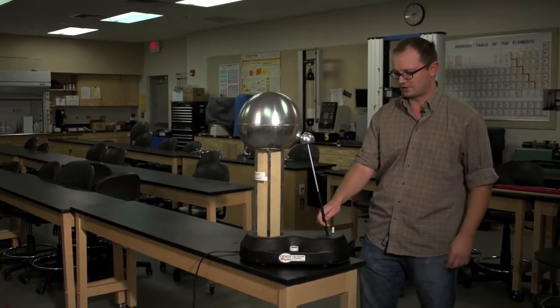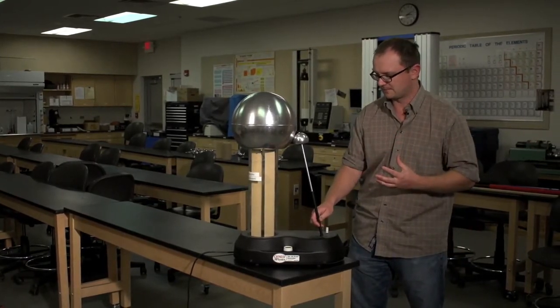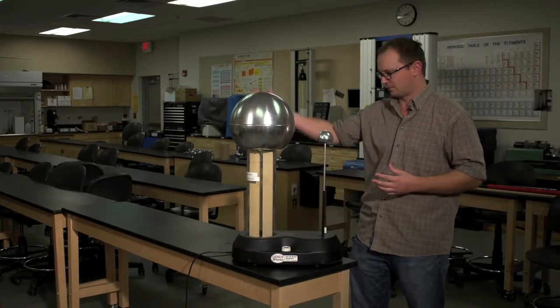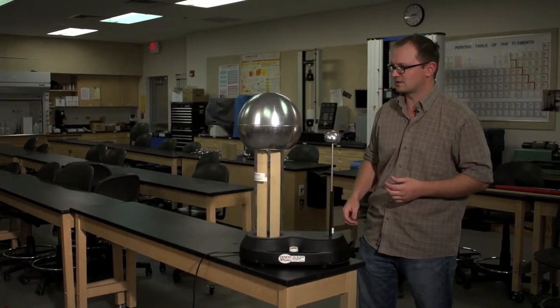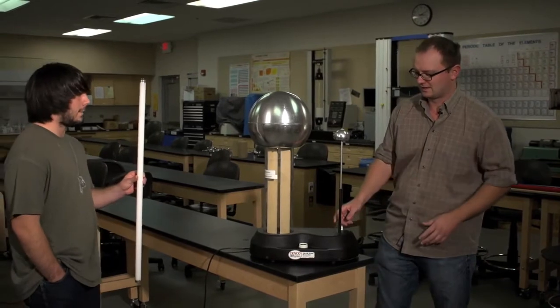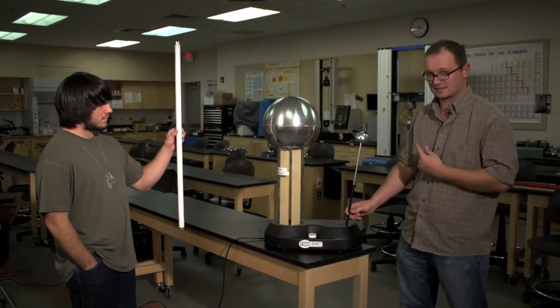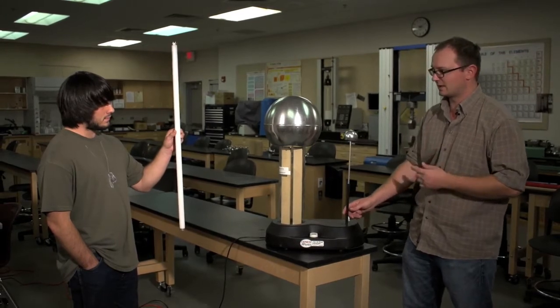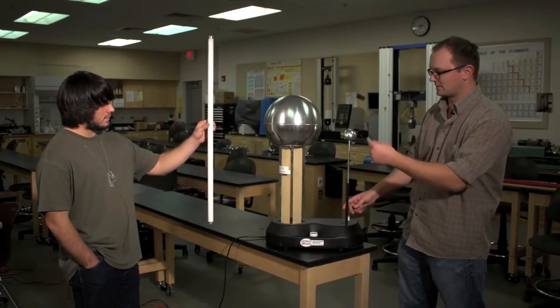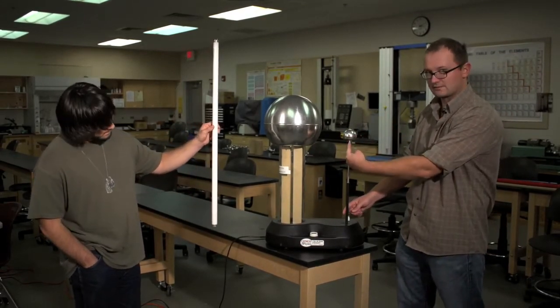Before we do that, I'm going to show you a dry run of what's going to happen. I'm going to have Nick approach and hold this light bulb, but Nick will never get closer than this grounding sphere, because if he does, he's going to get sparked. We want Nick to get close to this dome, but not closer than this grounding sphere.